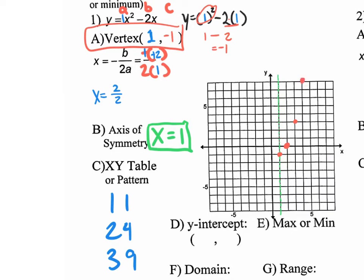We need to map those points over to the other side of the axis of symmetry. This point was 1 unit away, so go 1 unit the other way. This was 2 units away, so go 2 units. This is 3 units, so 3 units on the other side. It gets reflected over to get that perfect parabola. All we have to do is draw our parabola through those points. Try not to make it a V — try to make it a little curved. Put the arrows on it because it continues up forever. That's another 3 points for graphing.